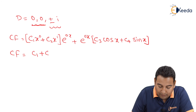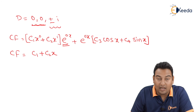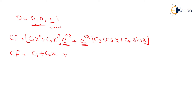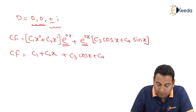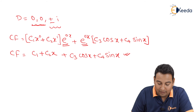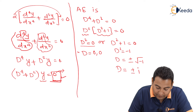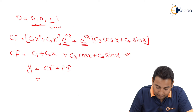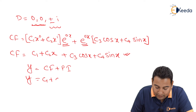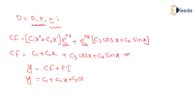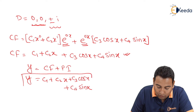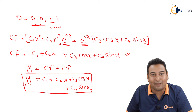So the CF is (c₁ + c₂x) + c₃ cos x + c₄ sin x. The complete solution is CF + PI, but PI is zero since RHS is zero. Therefore the required solution is y = c₁ + c₂x + c₃ cos x + c₄ sin x. Hope you understood — done with the problem, thank you.